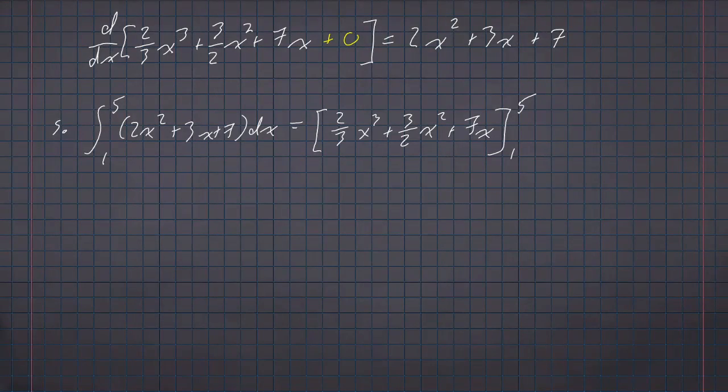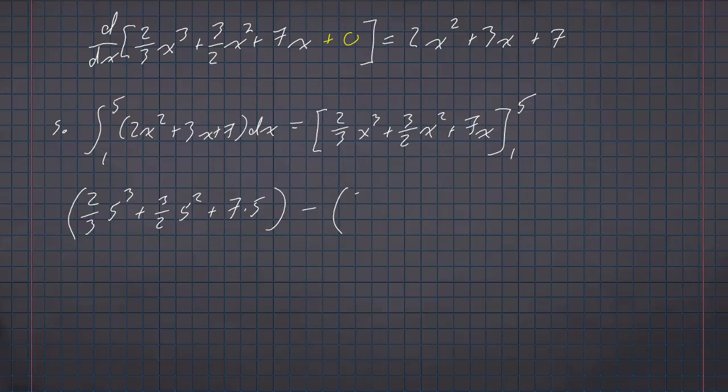Either way, this is telling us to evaluate the expression when x is five. So we'll have (2/3)(5³) + (3/2)(5²) + 7(5), and then evaluate the same thing when x is one and subtract them. So we have (2/3)(1³) + (3/2)(1²) + 7(1).